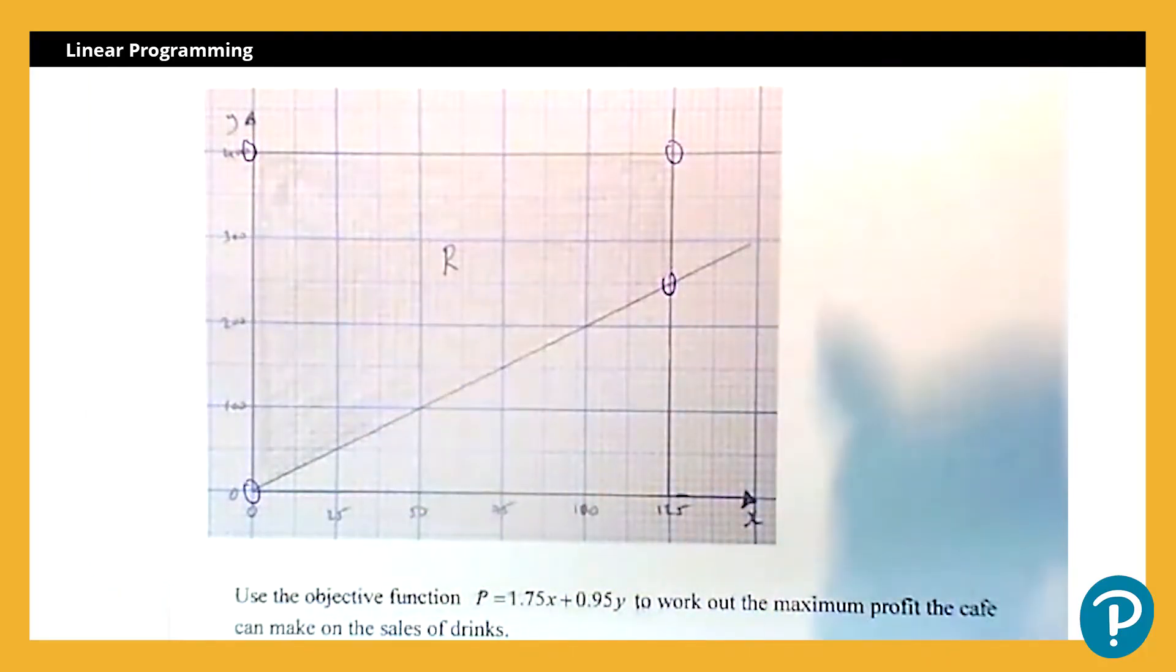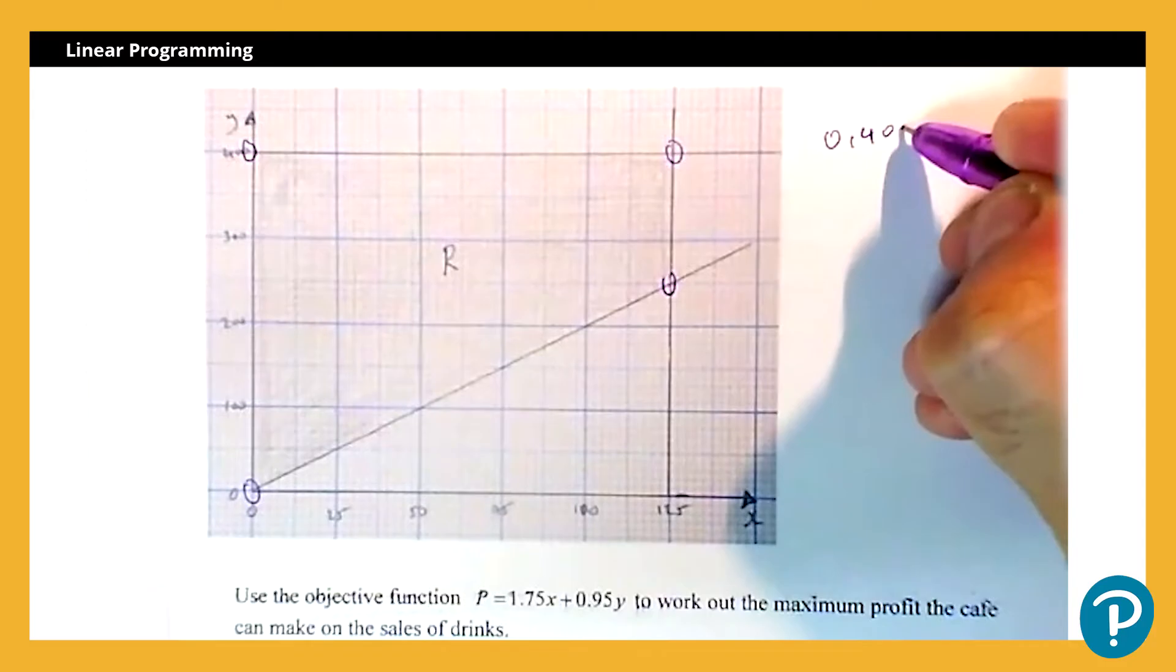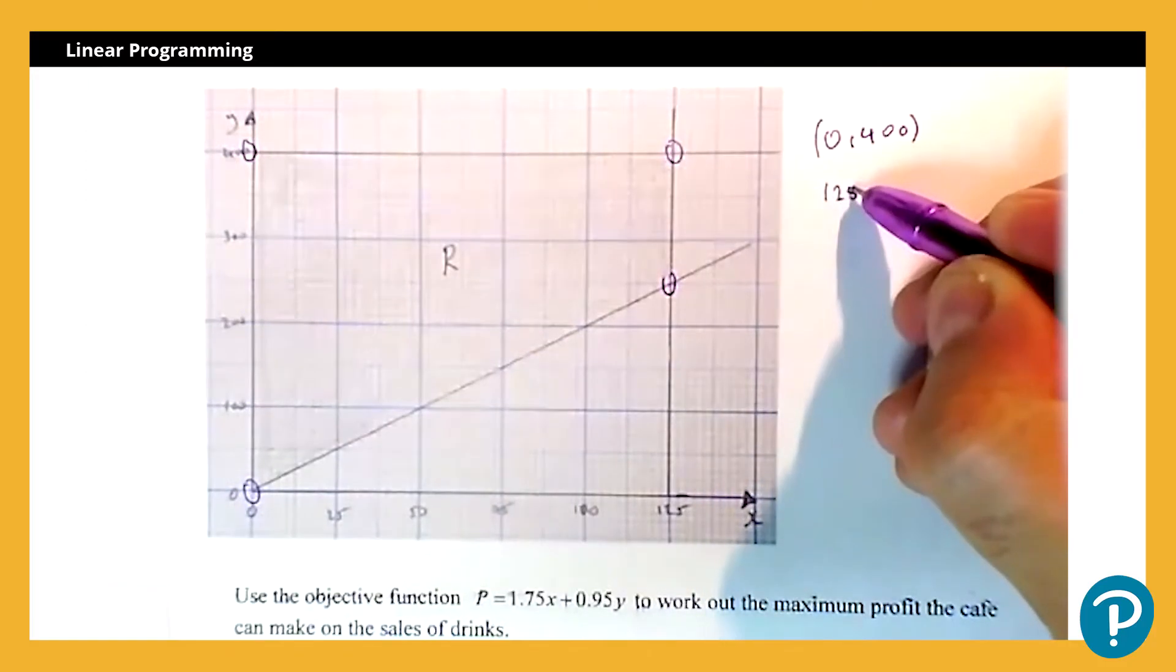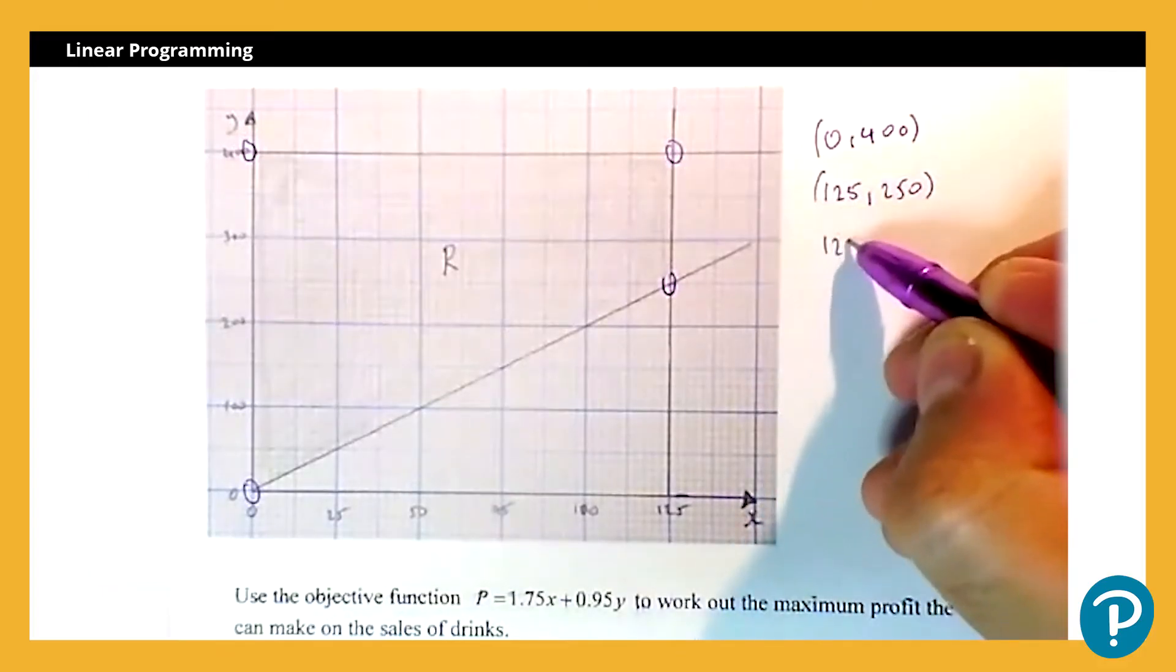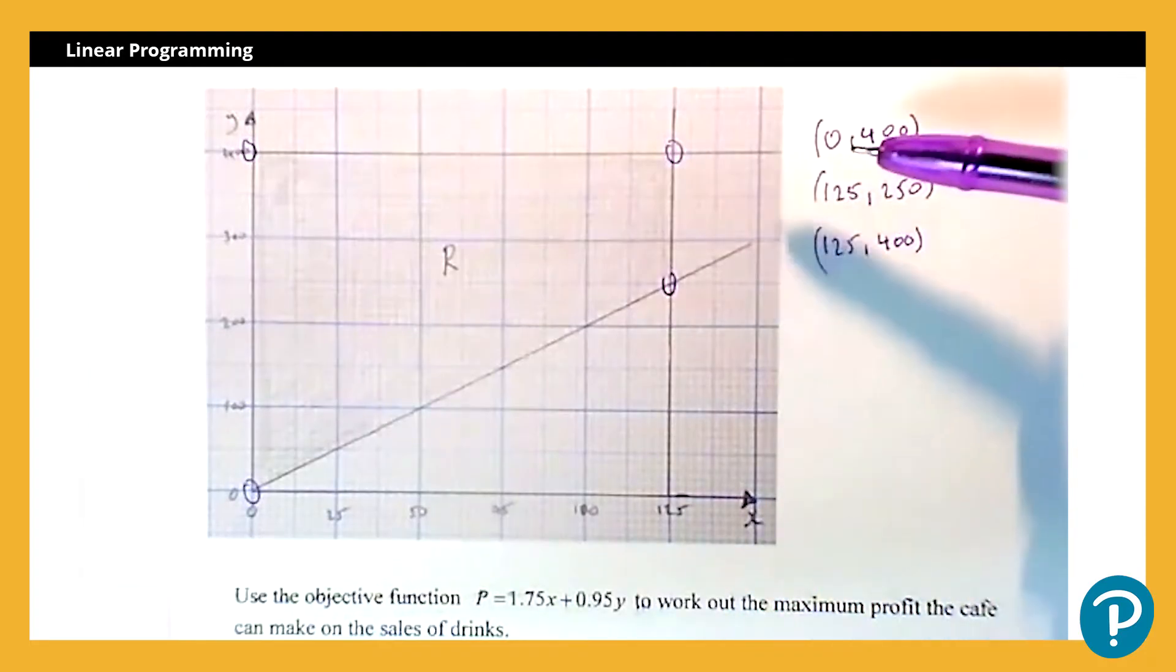So first thing I'm going to do is write down the coordinates at the vertices. So I've got (0, 400), and I've got (125, 250), and I've got (125, 400).